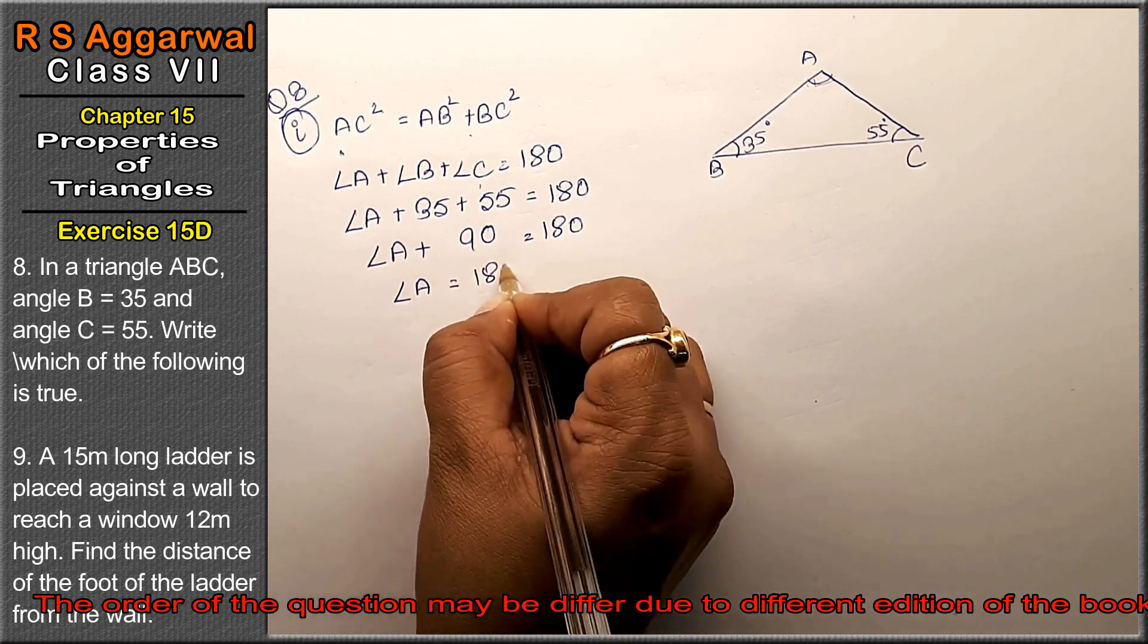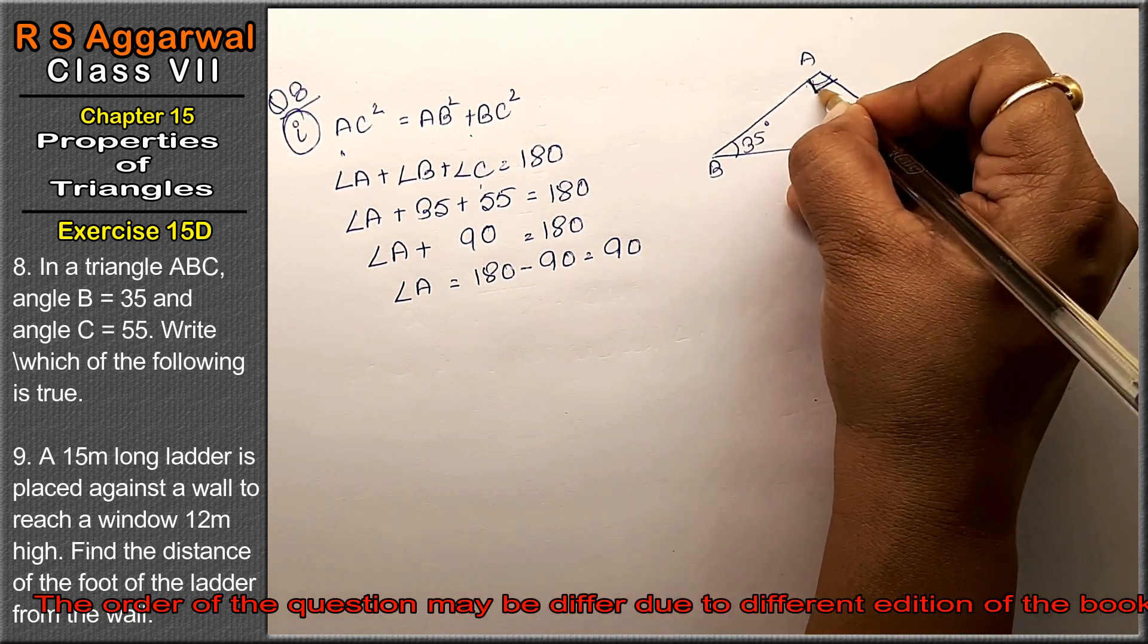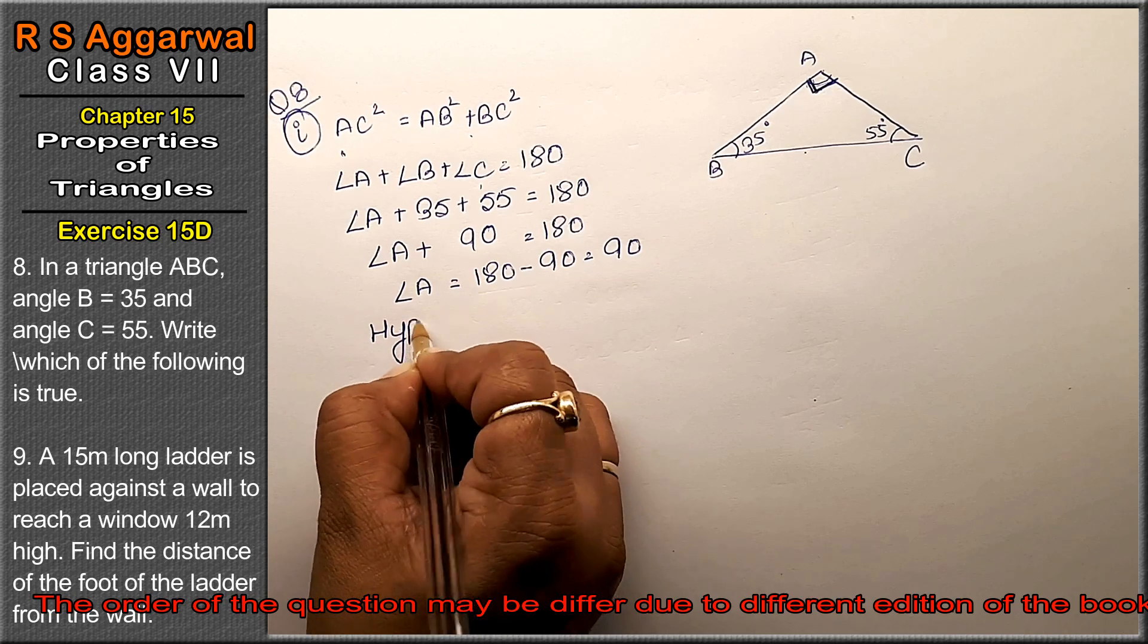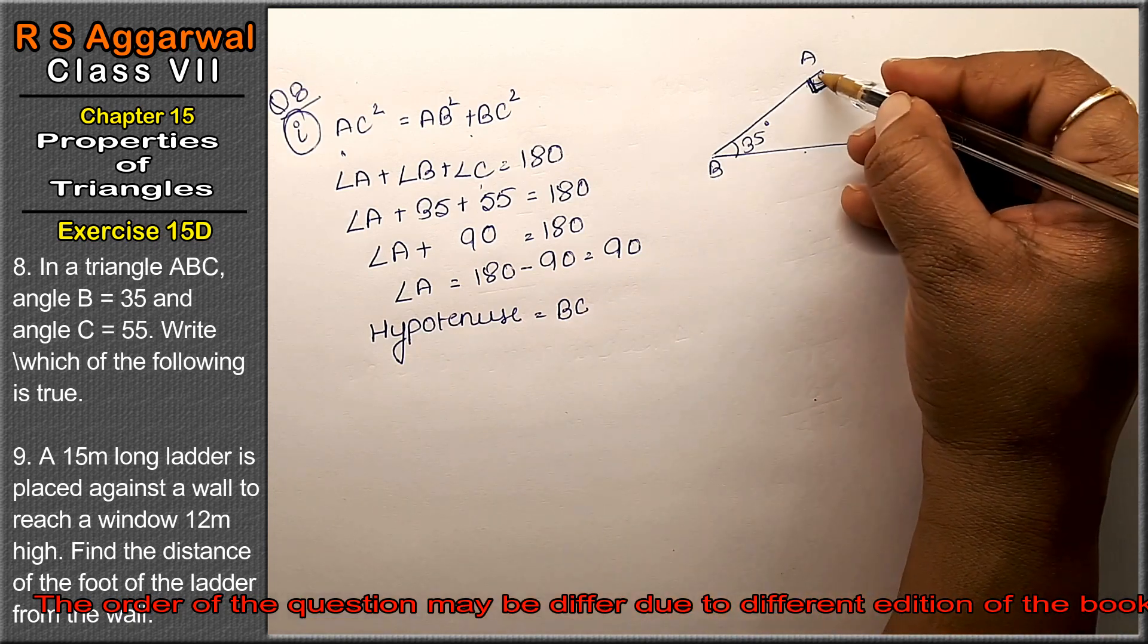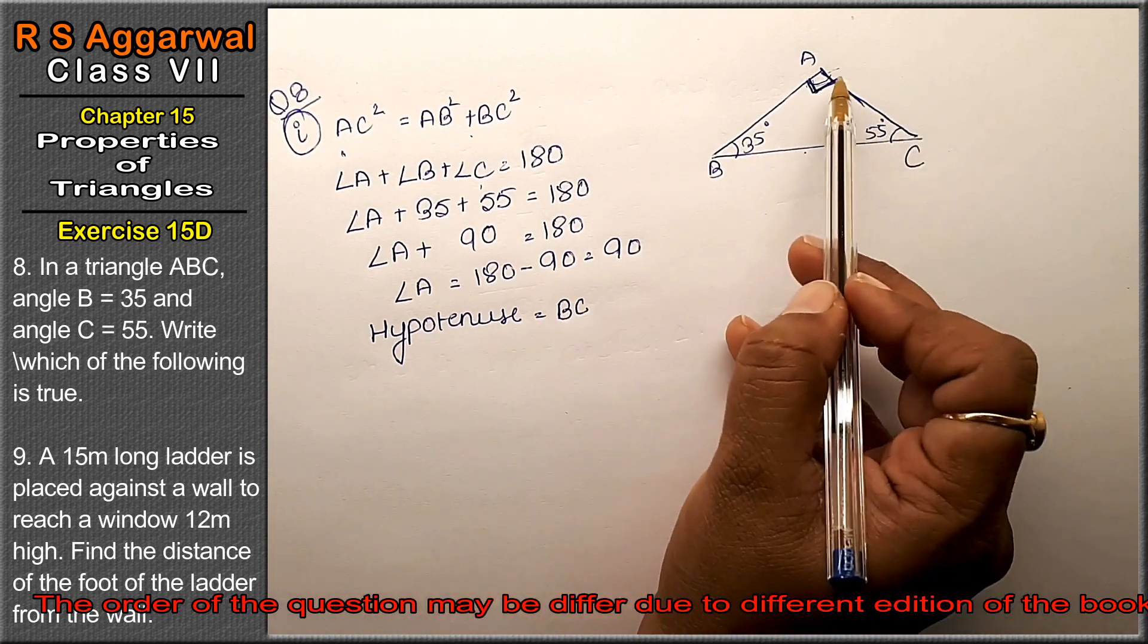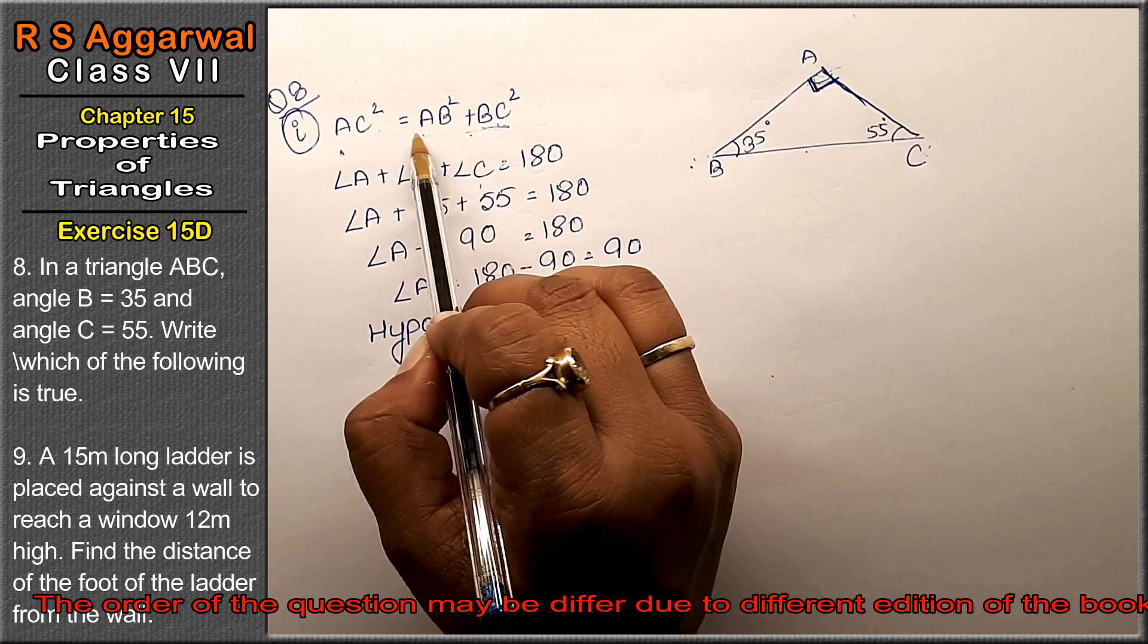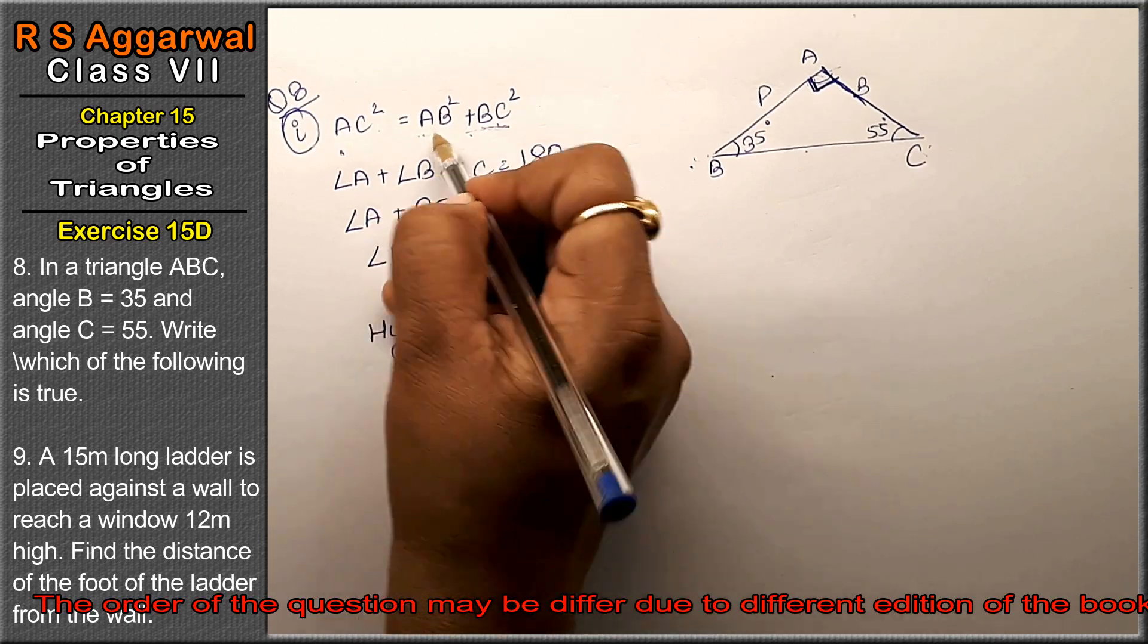180 minus 90, that is 90 degrees. So angle A is 90 degrees. Now in a right triangle, one side is hypotenuse, one side is base, and one side is perpendicular. So is AC² = AB² + BC² right? No.